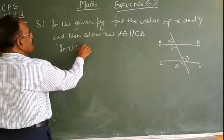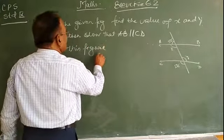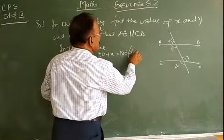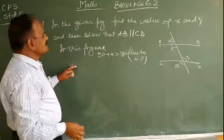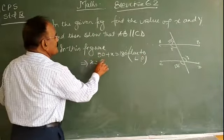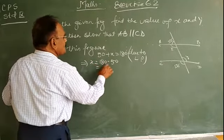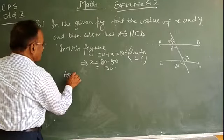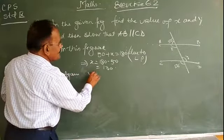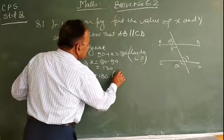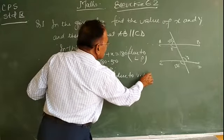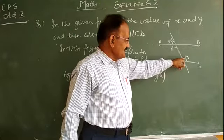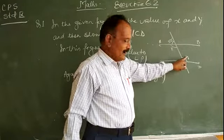In this figure, 50 plus x is equal to 180 degrees due to the linear pair property. So x is equal to 180 minus 50, that is 130 degrees. We have found the value of x. Again, y is equal to 130 degrees, because y and 130 degrees are vertically opposite angles.